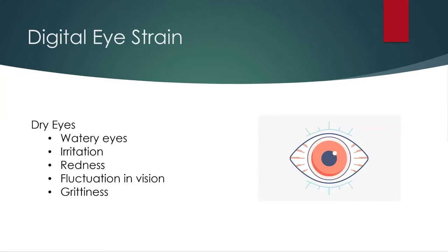Dry eye is a very common symptom. How do you know you have dry eyes? You might notice watery eyes, irritation, redness, and fluctuating vision. Sometimes when you blink your vision actually improves, but after staring at your screen for a few more seconds it gets blurrier again. Basically what's happening is that as your eyes are wide open, you're exposing the front surface of your eye, and the tears that lubricate that surface are evaporating. Once the tear evaporates, vision tends to get blurry. You might also notice a gritty, sandpaper-like feeling in your eye.